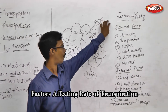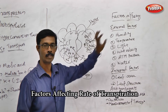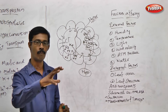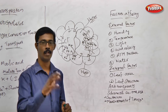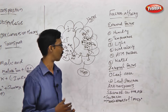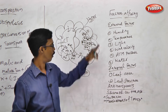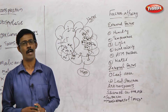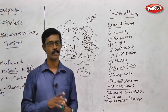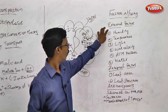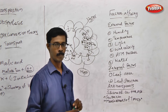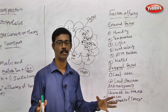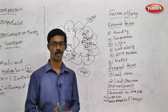Now we are going to talk about the factors which affect transpiration. What environmental factors affect transpiration? Not only the environmental factors, but also the internal factors. So the first external factor we are going to talk about is humidity. When humidity in the environment is very high, transpiration is very low.